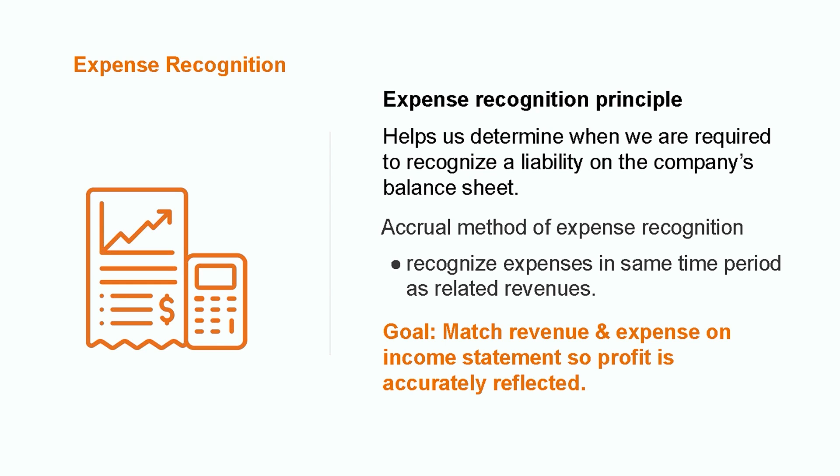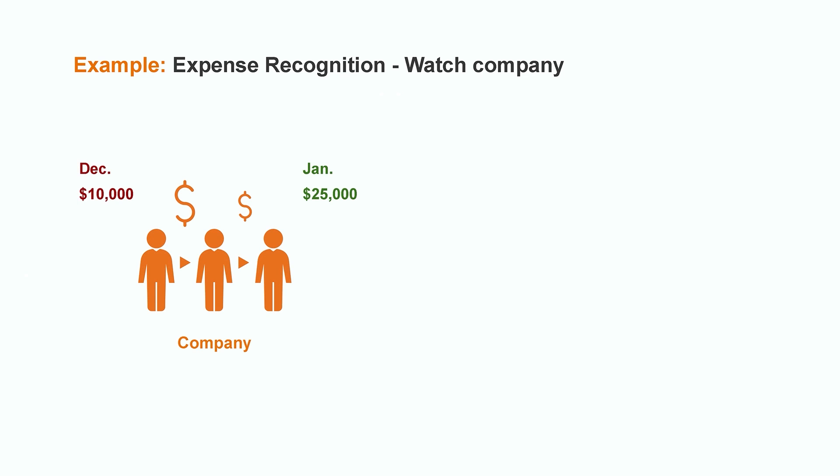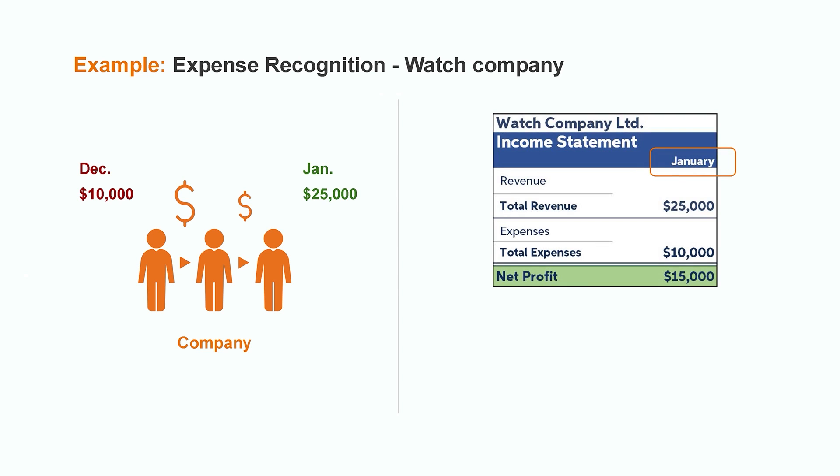The goal of this principle is to match up the revenue and expenses in the same period on the income statement so that profit is reflected accurately. For example, a company that sells watches purchased $10,000 worth of merchandise in December from their overseas supplier, then sells the watches in January for $25,000. Under the expense recognition principle, even though the company spent the $10,000 in December, the expense should not be recorded until January when the sale takes place, allowing the company to match the expense with the revenue and accurately reflect the $15,000 of profit.